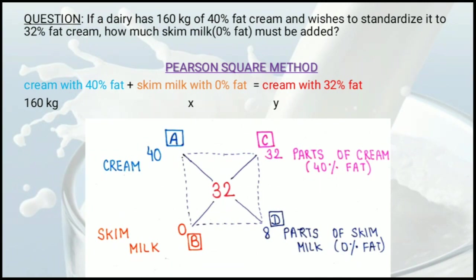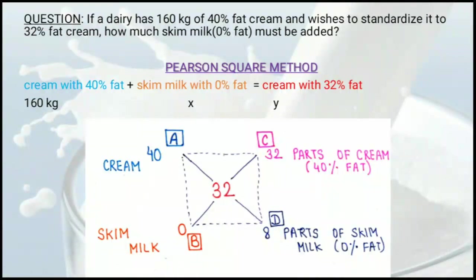A and C face each other, so both values are for cream. B and D face each other, so both values are for skim milk. This means 32 parts of cream with 40% fat and 8 parts of skim milk with 0% fat are to be mixed to produce cream with 32% fat.